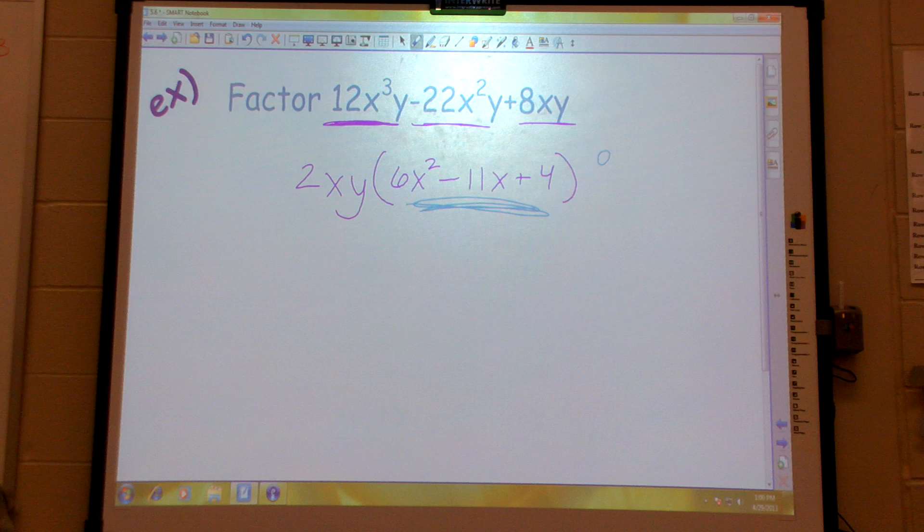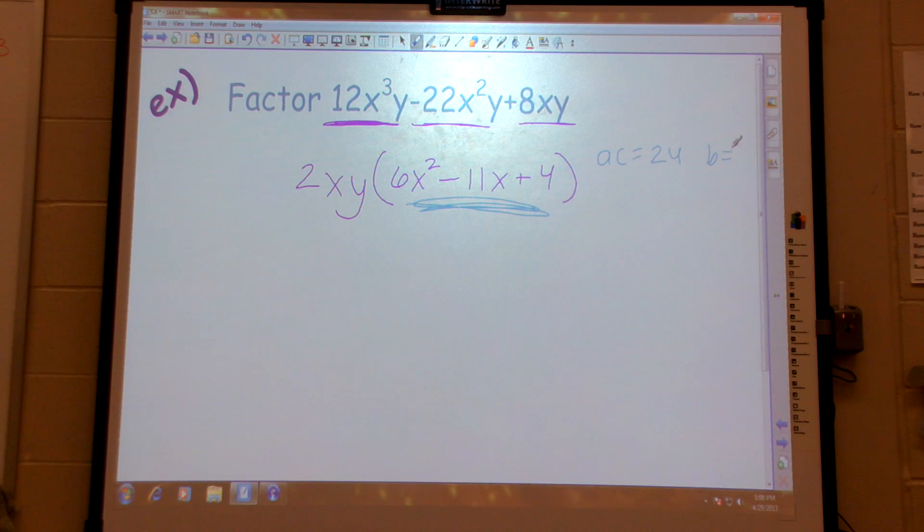Let's work on this. I'm going to ignore my GCF there. What's AC equal? 24. B is? Negative 11. Now remember this sign tells me they're the same and they're both negative.